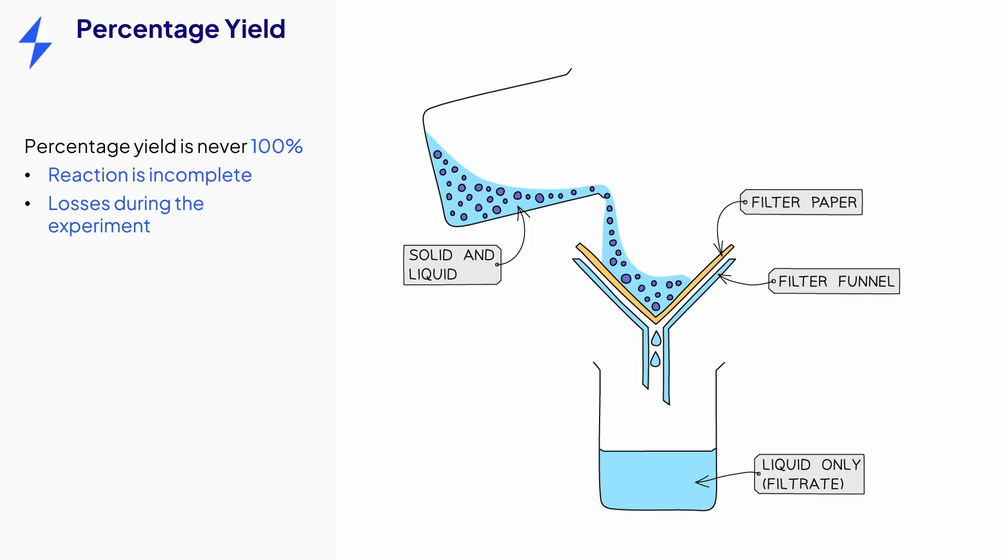There may be some losses during the experiment. So for example, some of the product might be lost from the reaction mixture during the separation and purification stages, such as filtration or distillation. Other losses might occur when the reactants or products are transferred from one container to another.